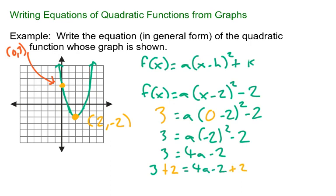3 plus 2 equals 4a minus 2 plus 2. That would give me 4a is equal to 5. 5 is equal to 4a. So a must be 5 fourths.